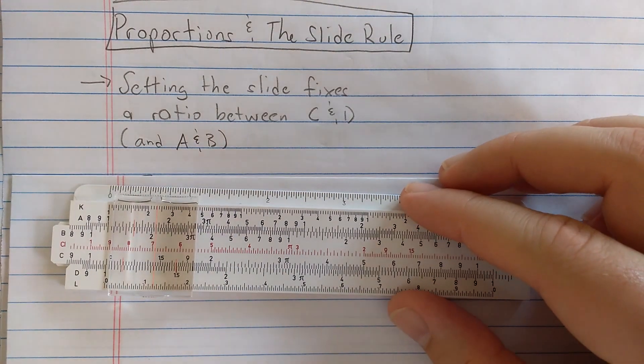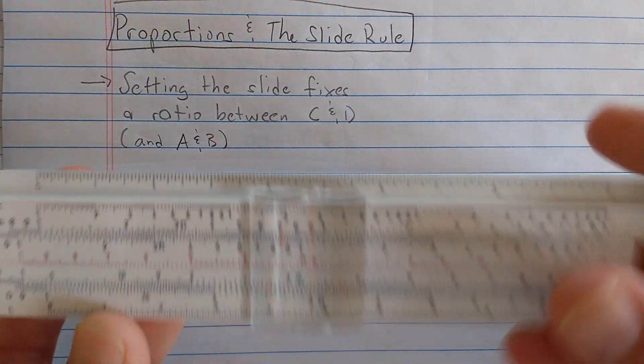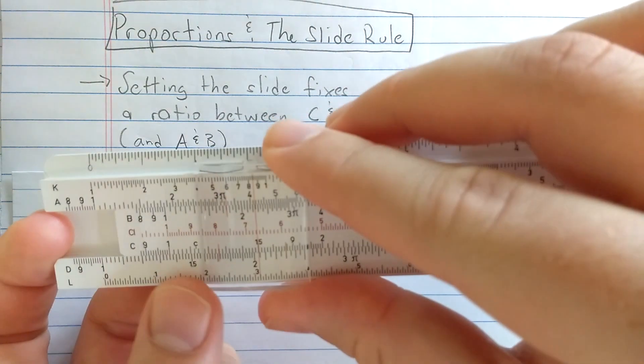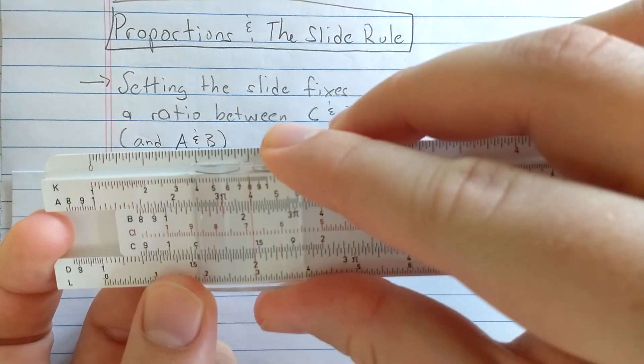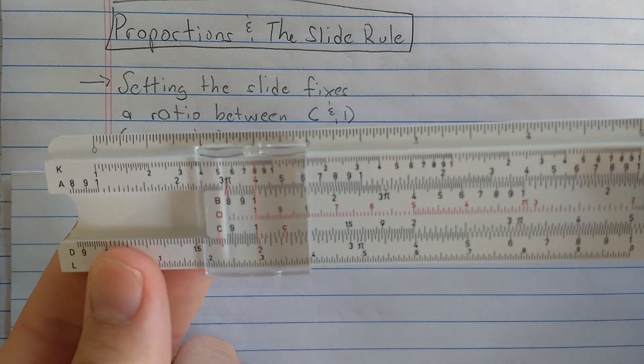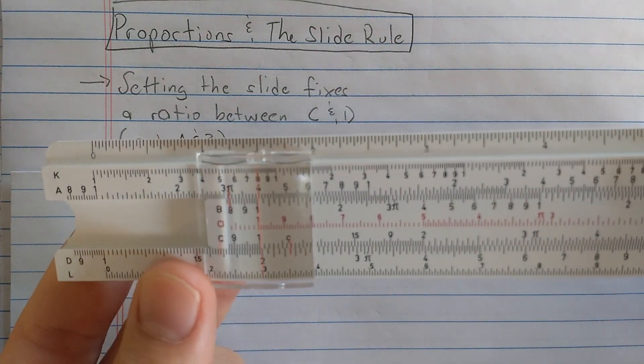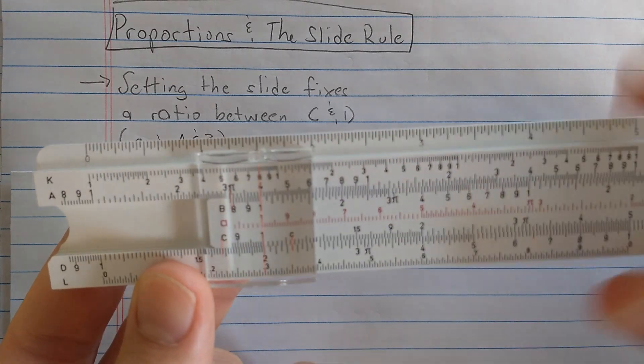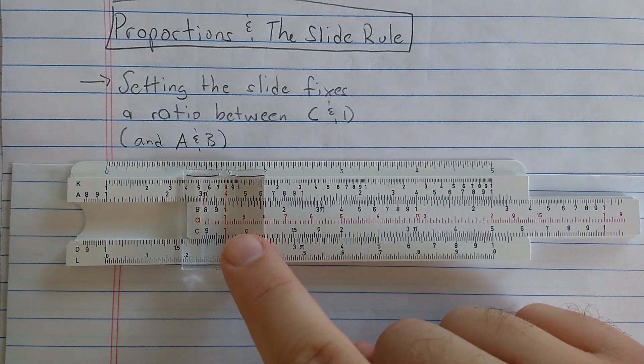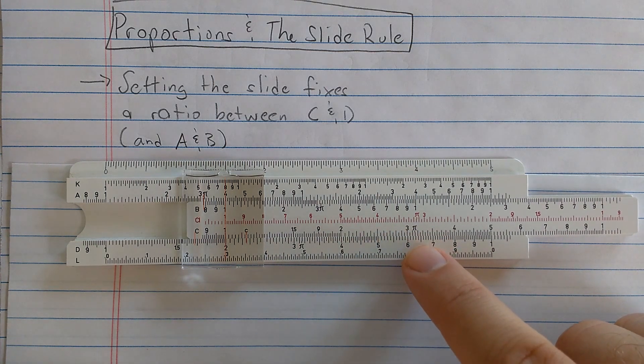So let's look at the C and the D first, and go back to the basics here. Remember to multiply, I want to multiply something by 2. I set the 2 on the D scale, then I align that with the index, the left index. Then say I want to multiply 2 by 3, right? I measure out 3 on the C, and I end up here over 6.